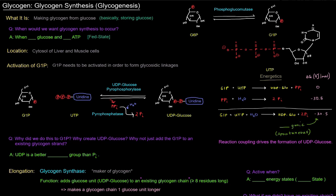So when would we want glycogen synthesis to occur? When would we want to store glucose? Well, it's when we have a lot of glucose and when we have a lot of energy, a lot of ATP, so in the fed state. So where does this occur? It occurs in the cytosol of liver and muscle cells.